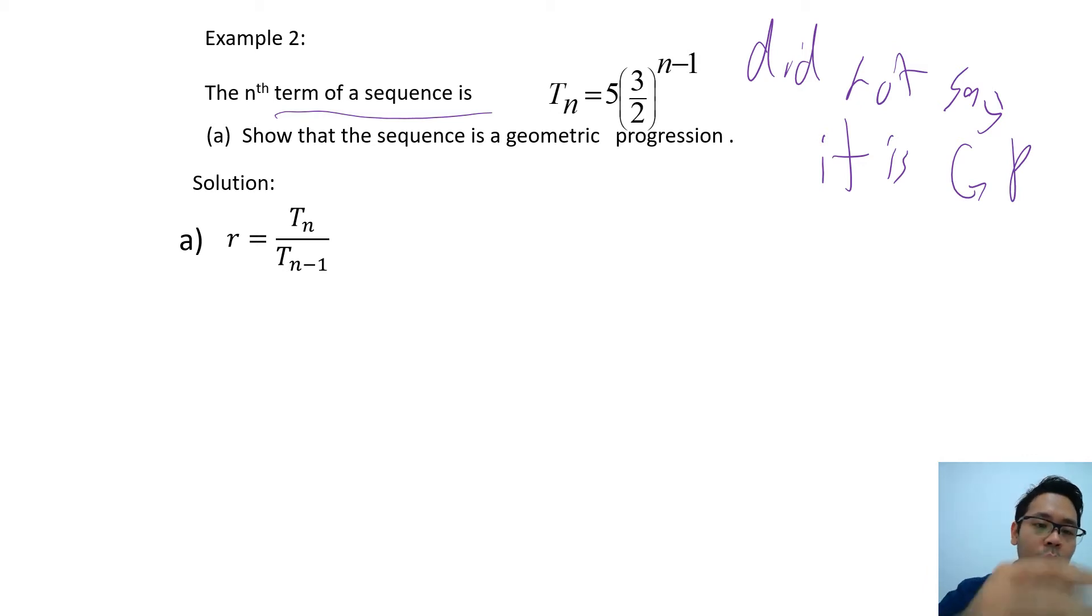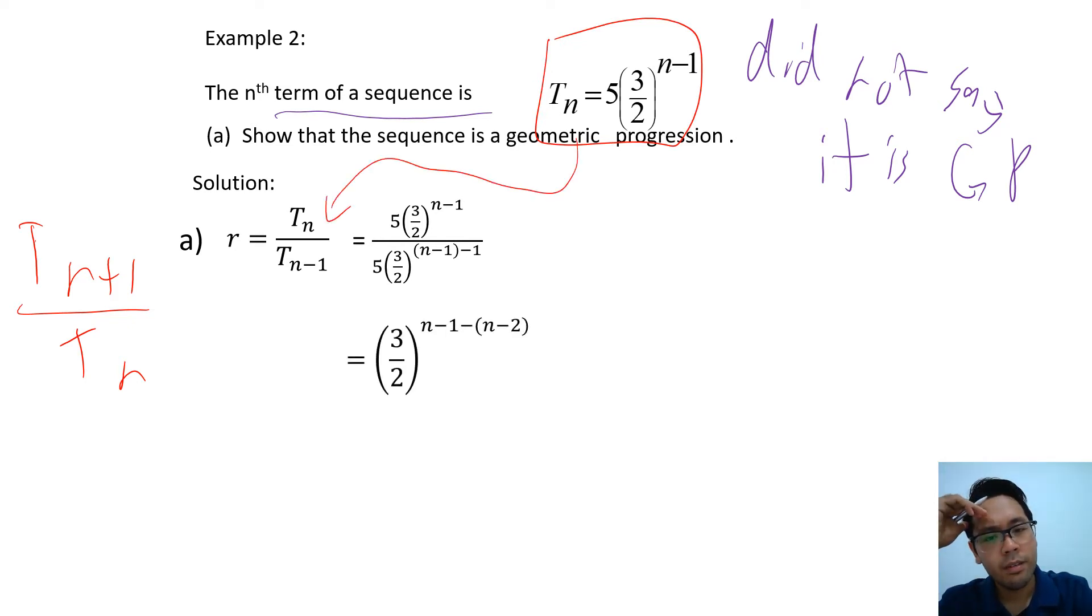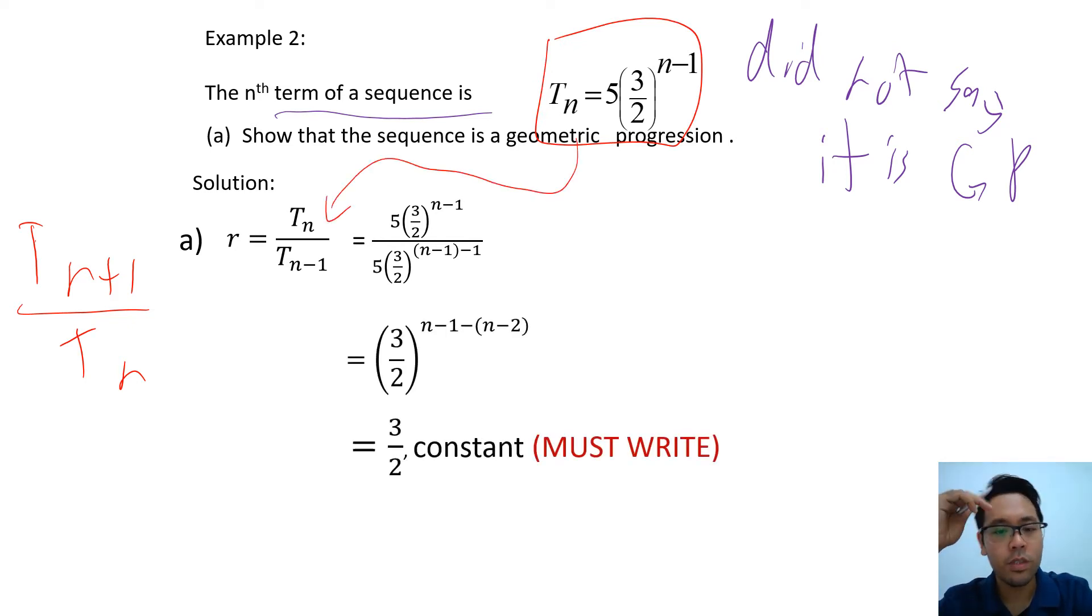The way for you to solve is by using Tn plus 1 over Tn. Just plug in the numbers into the Tn which was already given. So just plug in the numbers and solve it, and then you got 3 over 2 which is a constant.